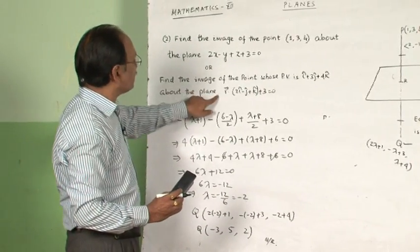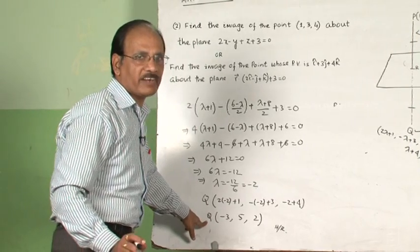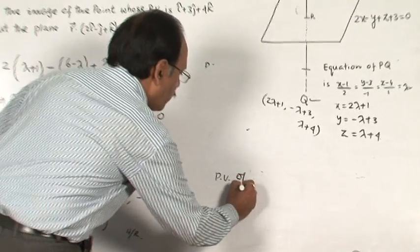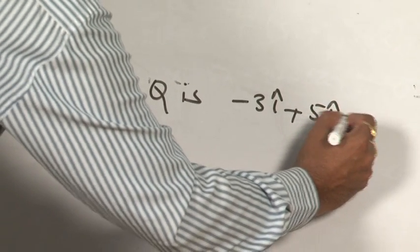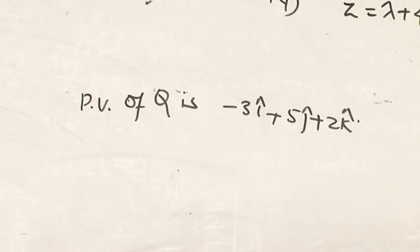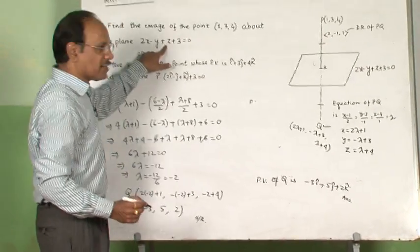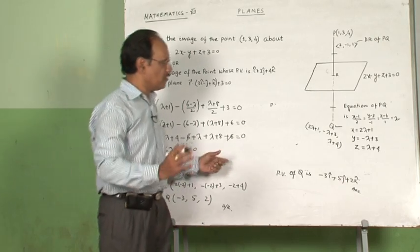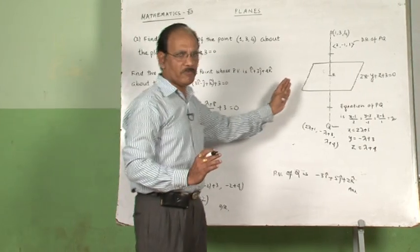If the question is given in vector form, the position vector of Q can be written as -3î + 5ĵ + 2k̂. You must be familiar with how to convert between Cartesian form and vector form, as the working method is the same.